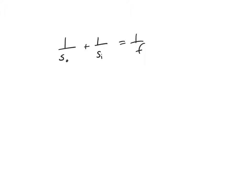Here's the equation. If you hate this equation, you don't like how it's written, just keep in mind it can also be written like this: 1 over the distance of the object plus 1 over the distance of the image equals 1 over the focal length.